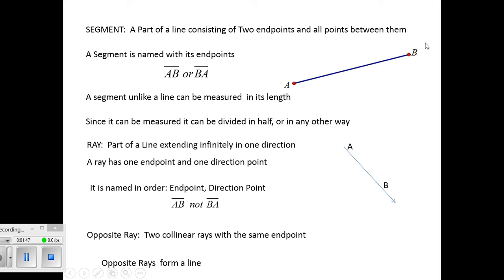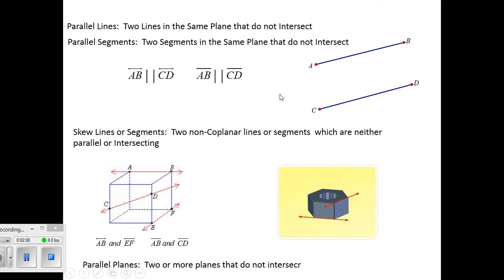Now unlike a line, we can measure how long is this segment. Three inches, two inches, two centimeters, two miles, what is it? And if it can be measured, then of course we can cut it in half or cut it in any way which we want and say that the two pieces add up into the whole segment. That's something we'll look at later called segment addition.